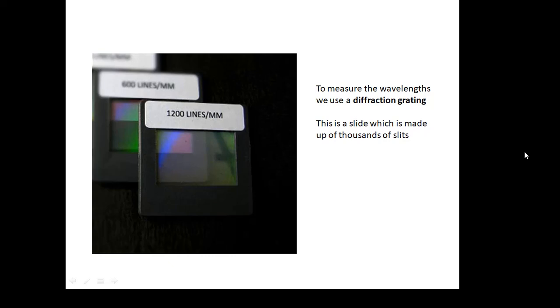To measure the different wavelengths, we use something called a diffraction grating, which is a slide which has thousands and thousands of slits. This particular diffraction grating has 1,200 lines per millimetre. The slits are very close together, lots and lots of slits.